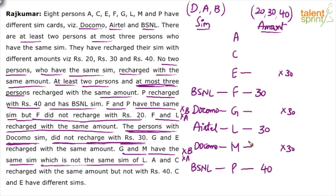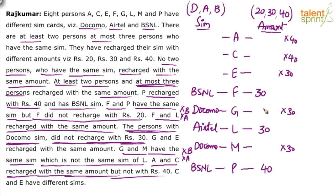A and C recharge with the same amount, but not with ₹40. So both can be ₹20 or ₹30. Can both take ₹30? No — there are already two ₹30s (F and L). Adding A and C would make four ₹30s, which exceeds the maximum of three. So ₹30 is also ruled out for A and C. With ₹40 and ₹30 both ruled out, the only possibility is ₹20. So A and C both recharged with ₹20.